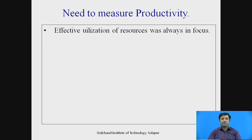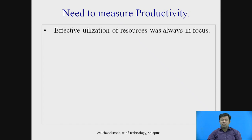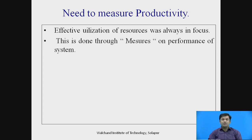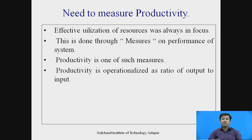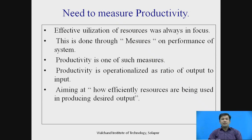Now the need to measure productivity. Productivity has been a very important theme. Utilization of resources — man, material, method, money — is always in focus, and this can be measured through performance of a system. Productivity is operationalized as the ratio of output to input. It aims at how efficiently our resources are being used to produce desired output.